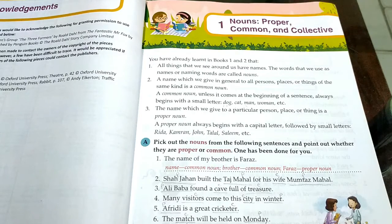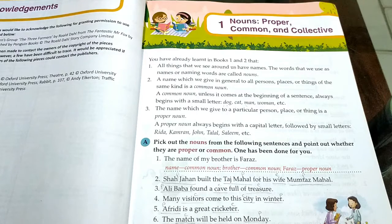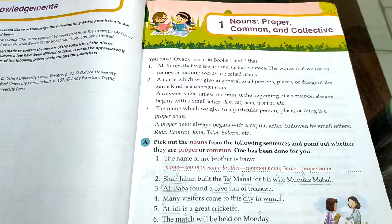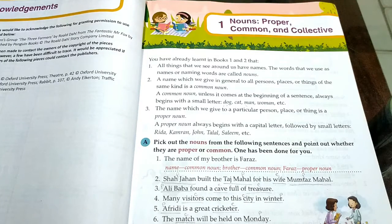'The birds had built their nest in the tree.' Birds — not a specific bird, so birds is a common noun. Nest — common noun. Tree — common noun. 'Mount Everest is the highest mountain in the world.' Mount Everest — proper noun. Mountain — common noun.